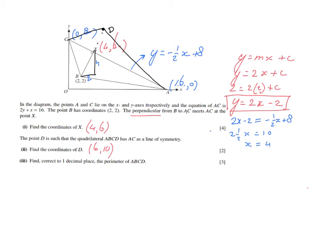And then finally, find correct to one decimal place. I always forget that. I do three significant figures because it's just automatism. But now they want it correct to one decimal place. The perimeter of ABCD. So we've got to find the length of AB plus the length of BC. And then we can multiply it by 2 because it's symmetrical. So we do not have to find 4 lengths. We find 2 lengths and then we multiply it by 2.